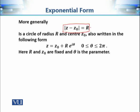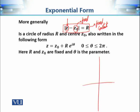The equation modulus of (z minus z-not) equals R means that we are considering all those complex numbers z whose distance from z-not is equal to R. The modulus of (z minus z-not) is basically the distance between these two points in the complex plane. So this equation represents a circle with center z-not and radius R.